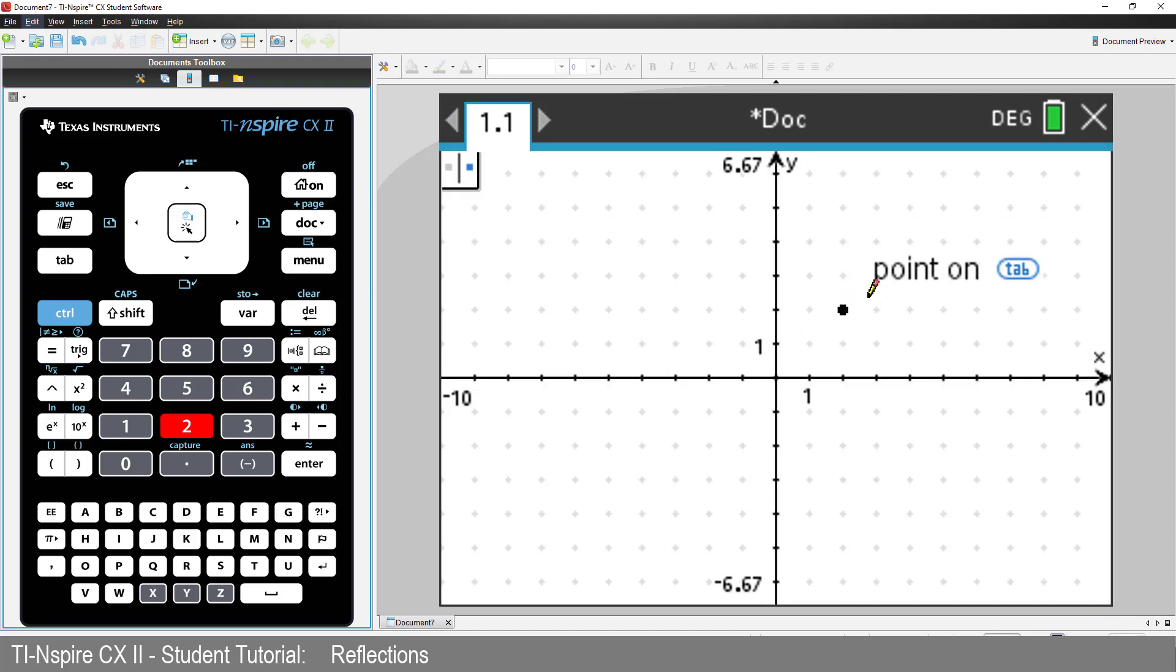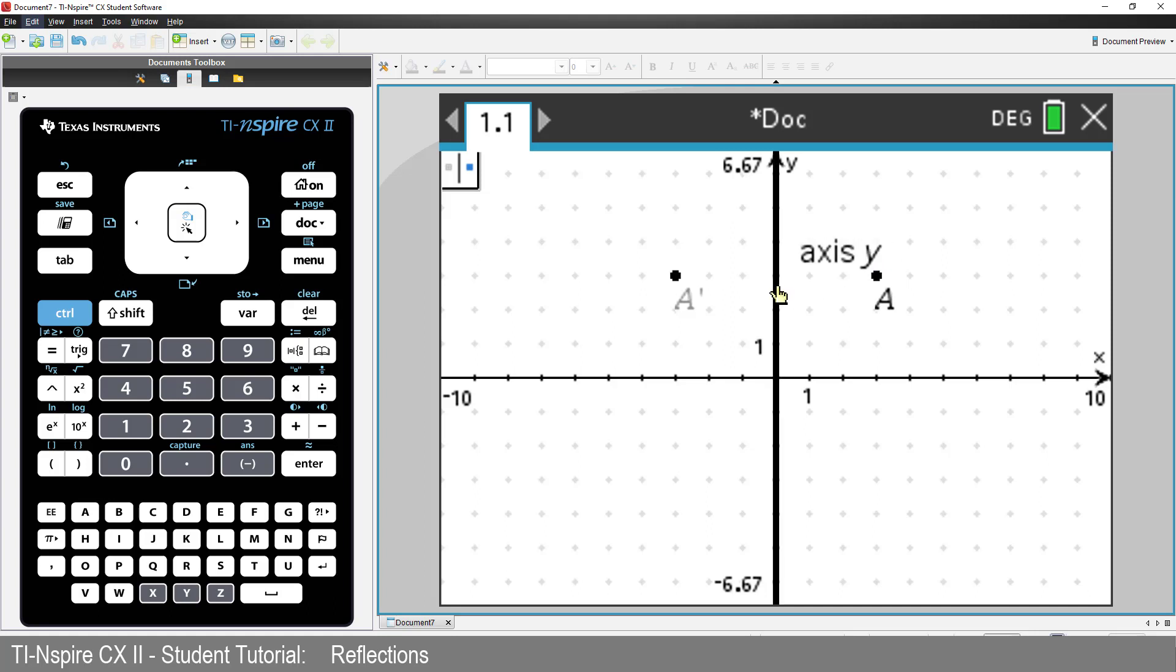Move the mouse over the grid so the tooltip displays Point On. Click on the grid to place the point. Now move the pointer over the y-axis. Notice that it becomes bold. Click on the y-axis. And now we have a reflection of Point A, labeled A-Prime.